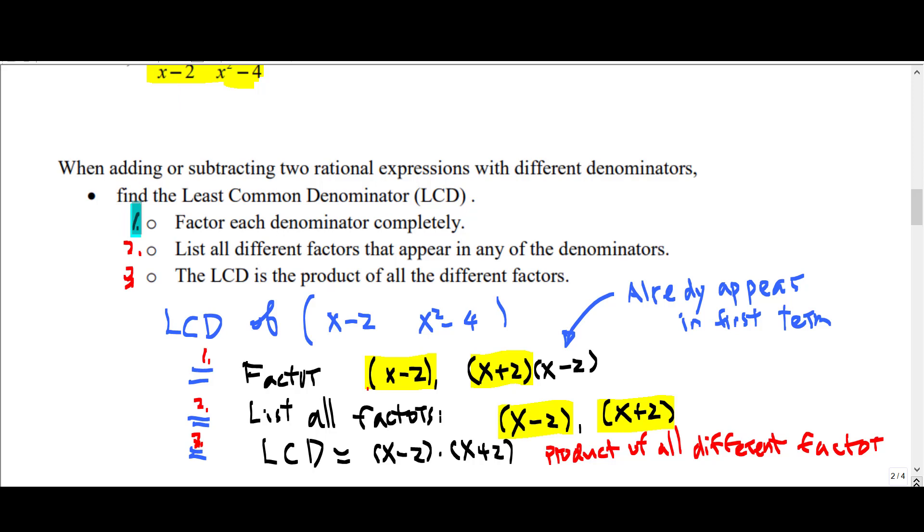Then you list all the factors that appear in the denominators. The factors are x minus 2, x plus 2, and x minus 2. Since x minus 2 already appears, all the distinct factors are x minus 2 and x plus 2.